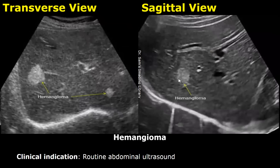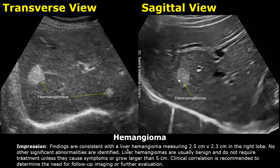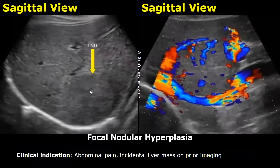A hemangioma is usually an incidental finding on ultrasound. Usually the clinical indication is routine abdominal ultrasound. The liver is usually normal in size and shape. A well-defined hyperechoic lesion with smooth borders is seen; such hyperechoic masses are consistent with a liver hemangioma. Liver hemangiomas are usually benign unless they cause symptoms or grow larger than five centimeters. Mention the size of the lesion and its location, followed by the line of clinical correlation.